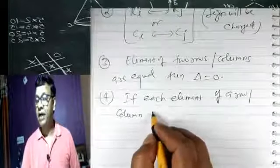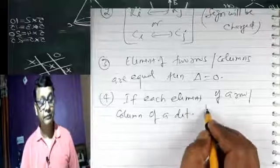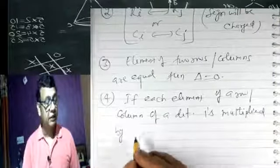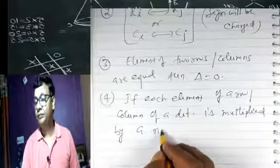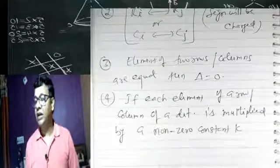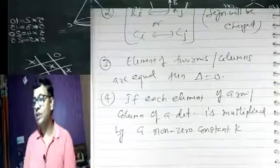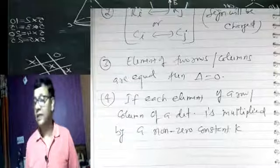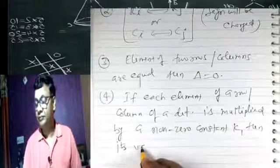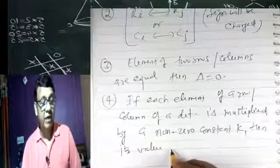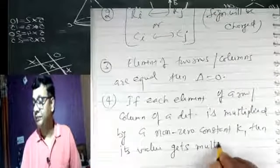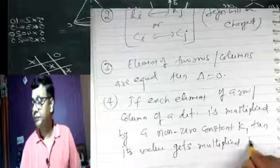Property number 4: agar determinant ko non-zero constant k se hum multiply kar dein, then its value gets multiplied by k.